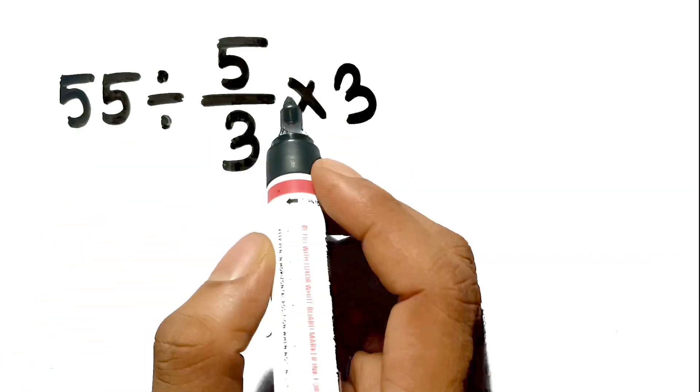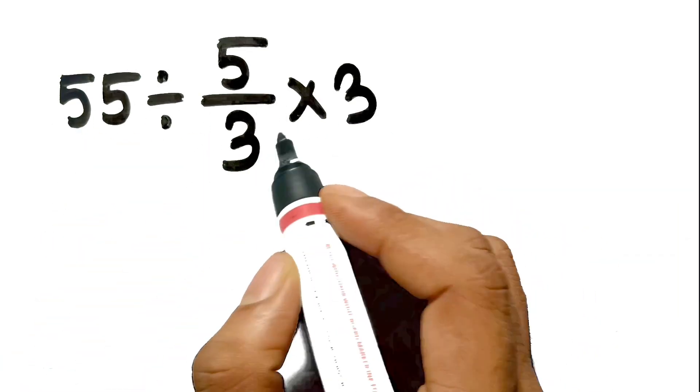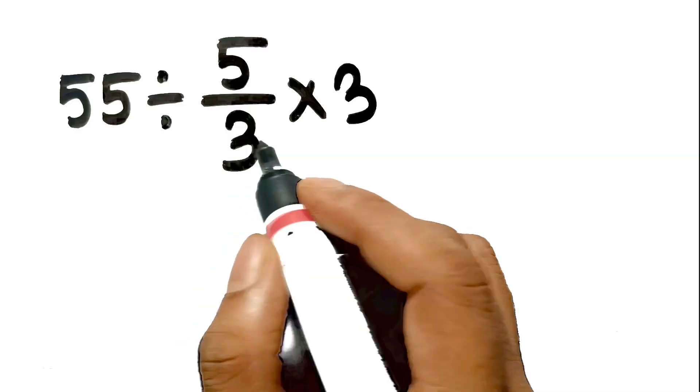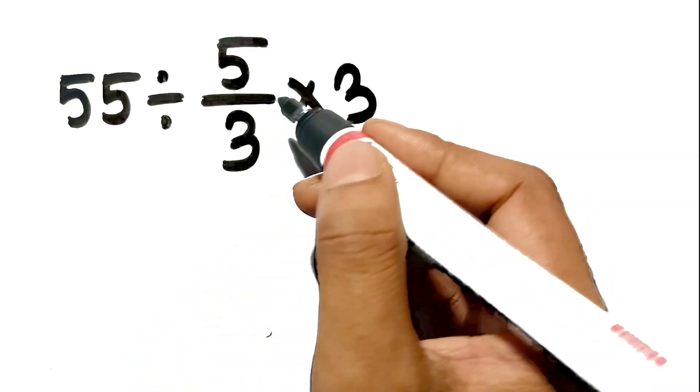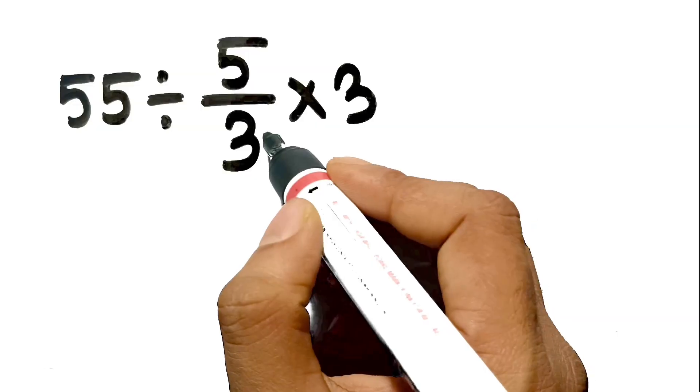When we look at this expression, our eyes are immediately drawn to the number 3. We see a 3 in the denominator of the fraction 5 over 3, and we see another 3 multiplying at the very end.